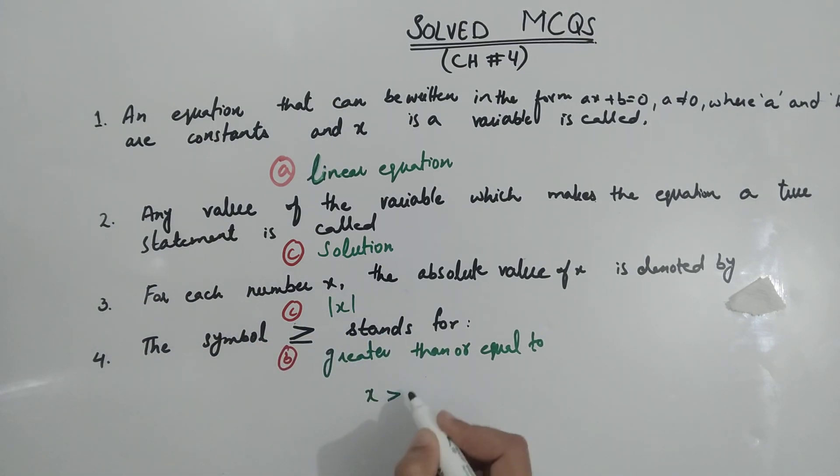Agar hum x greater than b likhte hain, isko likhenge x greater than b. Because here is open, so if open is greater then x is greater than b. If b is greater than x then it will be b less than x, because if b is closed then it will be less than x. So this reading depends on what answer will be.